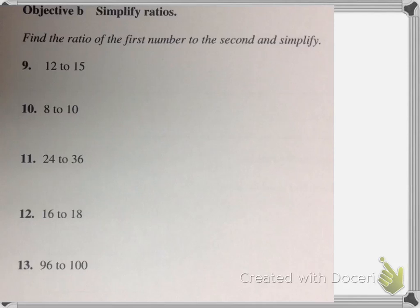So if I have 12 to 15, how can I simplify that fraction? Well, they both have a 3 in common, so I can divide the numerator by 3, which would give me 4, and I could divide the denominator by 3 as well and get 5. So 12 to 15 is the same thing as 4 to 5.